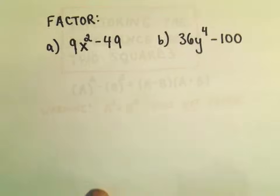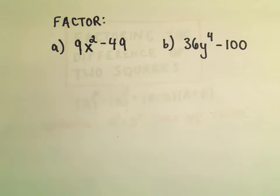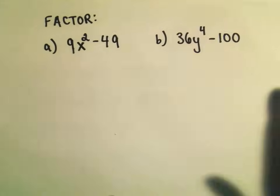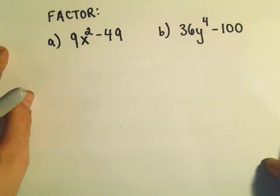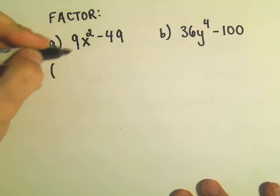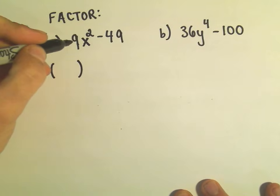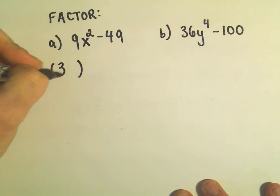Just a couple basic examples here. 9x squared minus 49, and then 36y to the fourth minus 100. All you have to do, we can even rewrite it first, we want to rewrite the first term as something squared. To write 9 as something squared, we would need a 3. And then to get x squared, we just need an x.